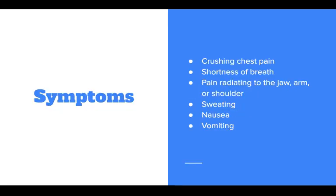ACS is classically recognized by one or more of the following symptoms: crushing chest pain, shortness of breath, pain that radiates to the jaw, arm, or shoulder, sweating, and/or nausea or vomiting.